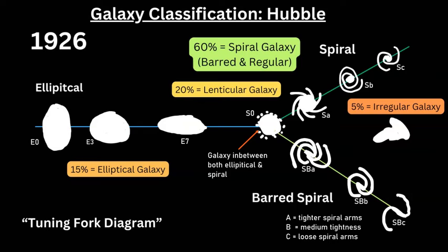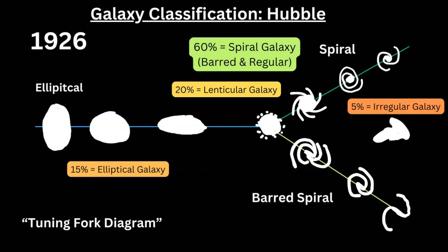There are also lenticular galaxies, which have no defined spiral shape — more of a circular mass — making up around 20% of all known galaxies he examined. Finally, a small 5% are irregular galaxies, which by their name have an irregular shape, indicating that gravity is not working as expected as it does in elliptical, lenticular, and spiral galaxies, suggesting something else is occurring to create that irregular form.